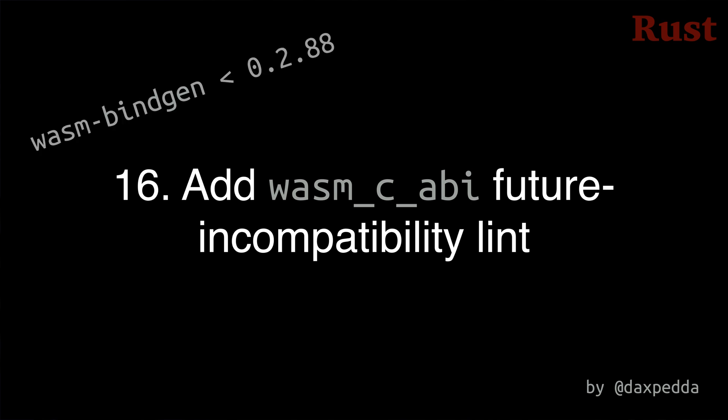Number 16: Using wasm-bindgen versions earlier than 0.2.88 will break in the future, since this is the first version to support the spec-compliant CABI. So a new warn-by-default compiler lint has been added to start alerting people to upgrade.